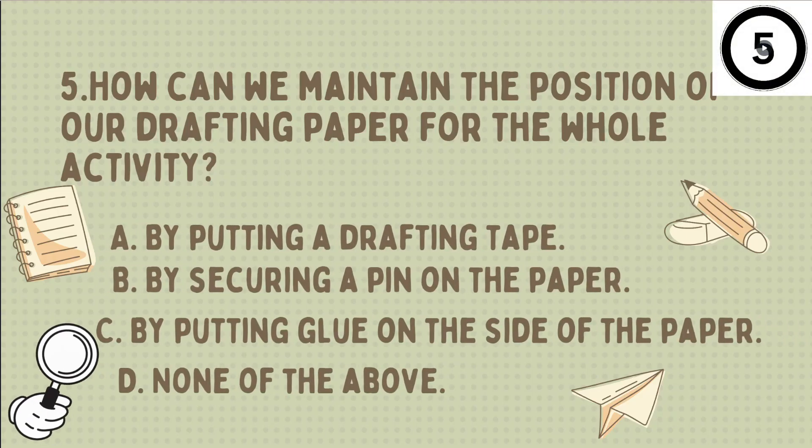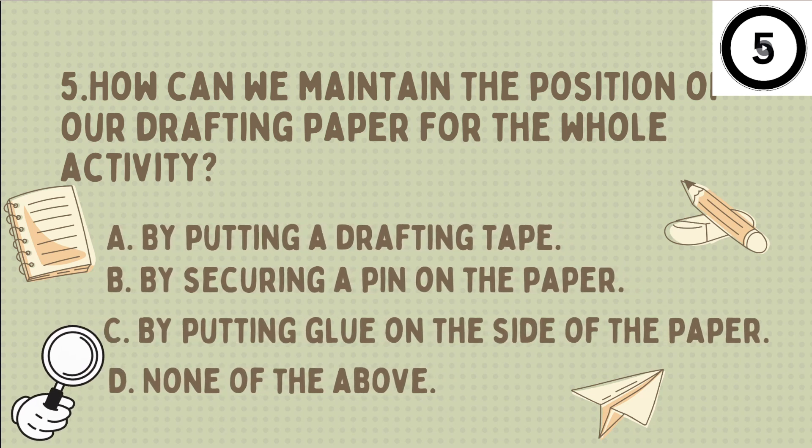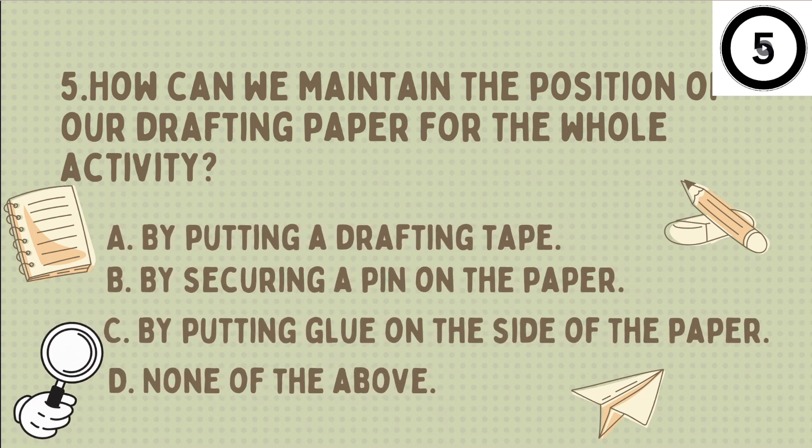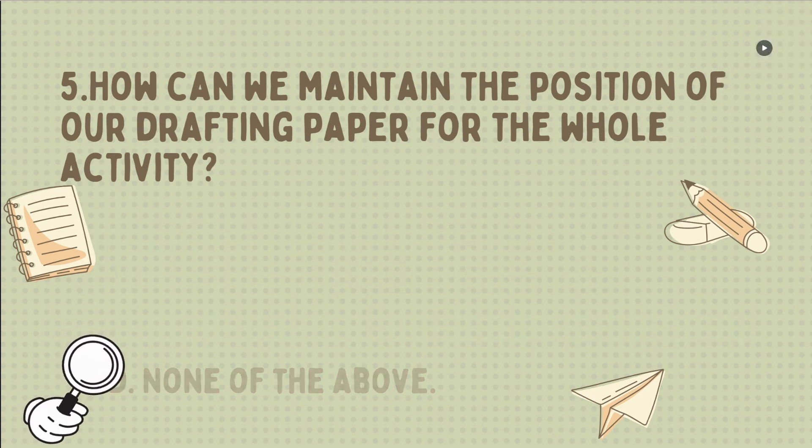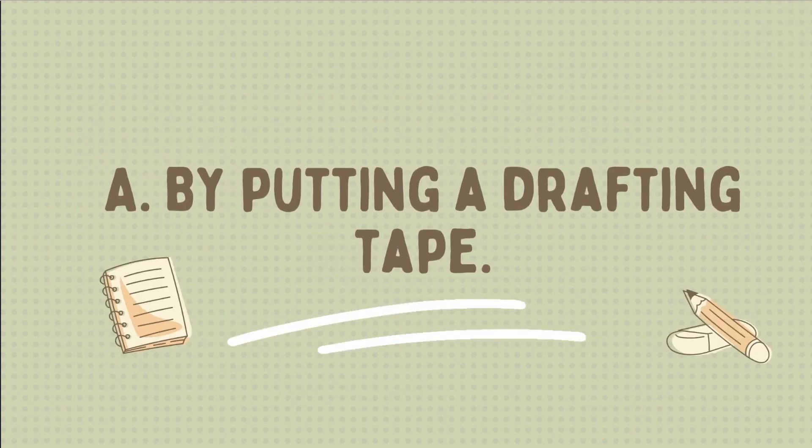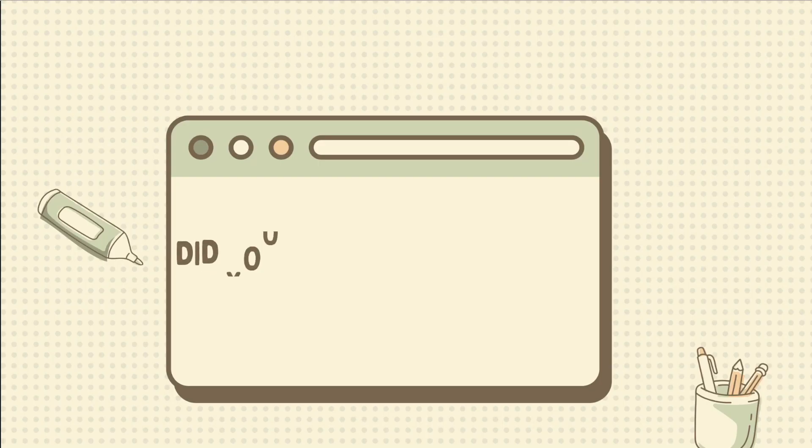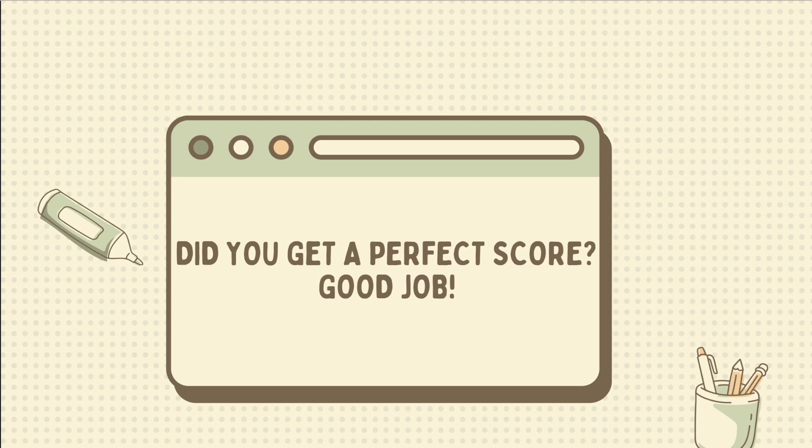The last one we have. How can we maintain the position of our drafting paper for the whole activity? Is it A, by putting a drafting tape, B, by securing a pin on the paper, letter C, by putting glue on the side of the paper, or letter D, none of the above. All right! I believe all of you got the correct answer. Yes, that's correct! It's letter A, by putting a drafting tape. Did you get a perfect score? Good job! I hope you learned something on our lesson and in our demonstration.